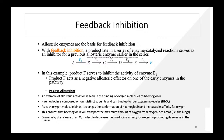An example of positive allosterism is the binding of oxygen to hemoglobin. Hemoglobin is composed of four distinct subunits and can bind up to four oxygen molecules (HbO₄). As oxygen binds, it changes the conformation of hemoglobin and increases its affinity for more oxygen, ensuring maximum oxygen transfer from oxygen-rich areas. Conversely, release of an oxygen molecule decreases hemoglobin's affinity for oxygen, promoting its release in tissue.